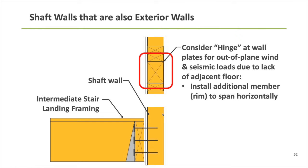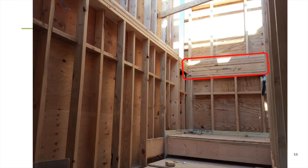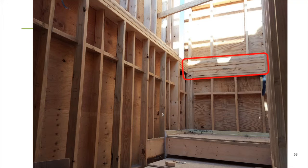A photograph illustrating this horizontally spanning member in the plane of the wall: you can see the stairs coming up, an intermediate height landing, and roughly three feet above that the typical floor line elevation. This is an exterior wall that's also a shaft wall, so we have this potential hinge scenario. This member was installed spanning from the far left corner of the shaft all the way across, fully across the shaft enclosure, providing the means of resisting these out-of-plane stud reactions.